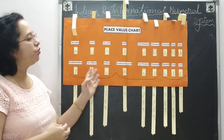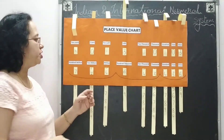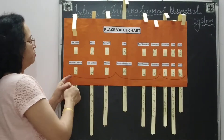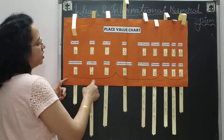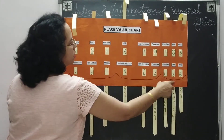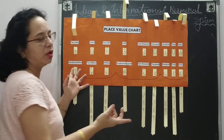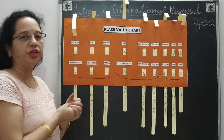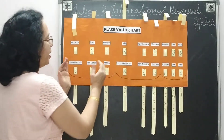Now we will go for the international number system. You can see there — I have made arcs on this chart. Each arc is after three digits. So we need to read the number in groups of three digits at a time.